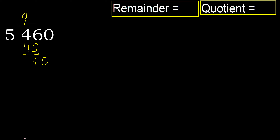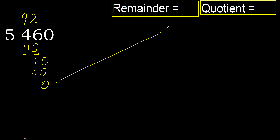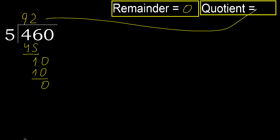Next, bring down 0 to get 10. 5 multiplied by 2 is 10, which is not greater. 10 minus 10 is 0. There is no remaining number, therefore we finish.